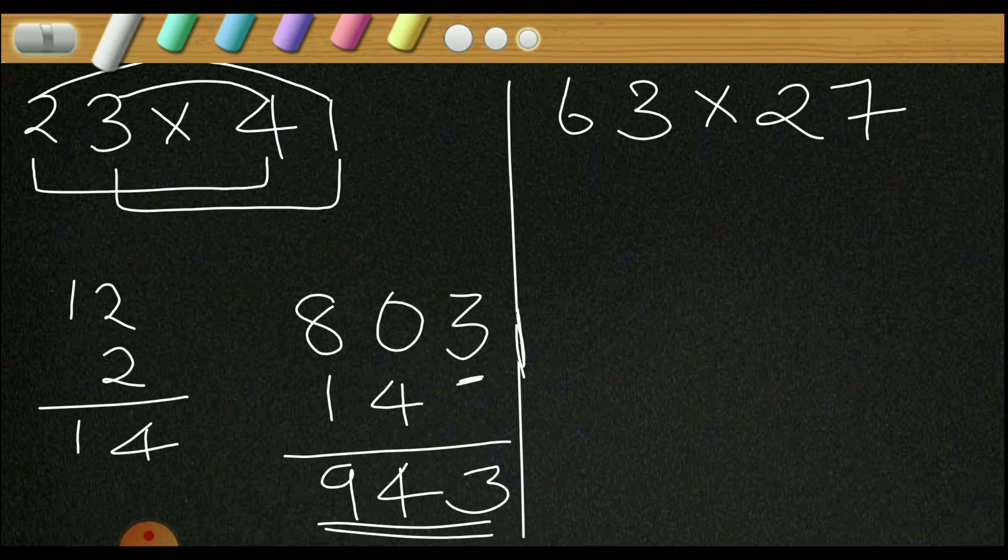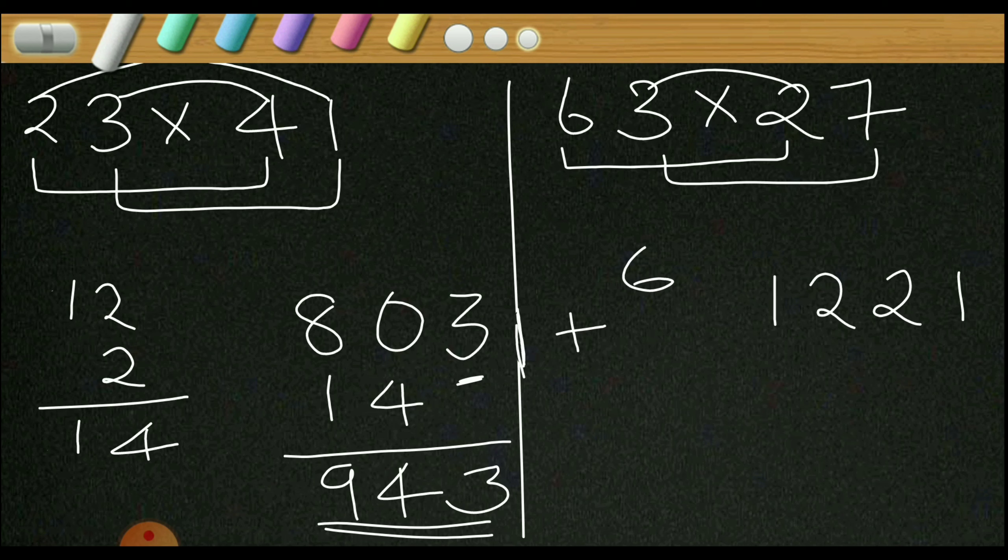First step is to multiply 3 and 7. 7 into 3 is 21. Now next you have to multiply 6 into 2, that is 12, write it like this. Now 3 into 2 is 6 plus 6 into 7 is 42. Add these two numbers, it becomes 48.